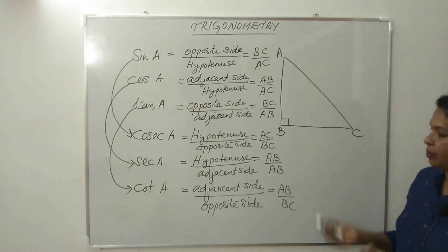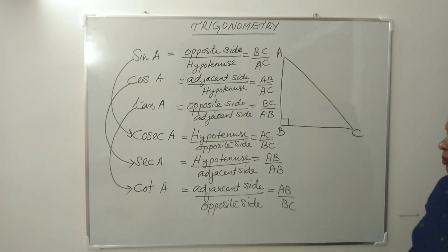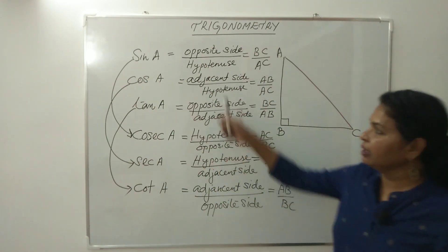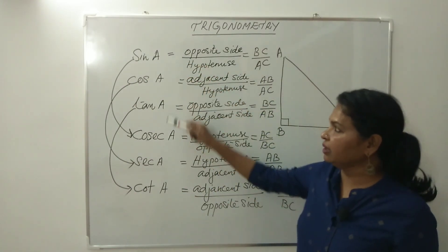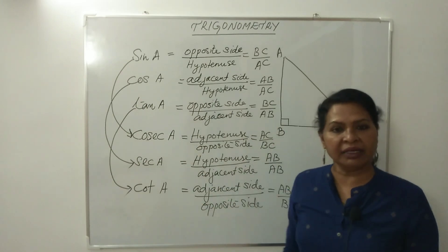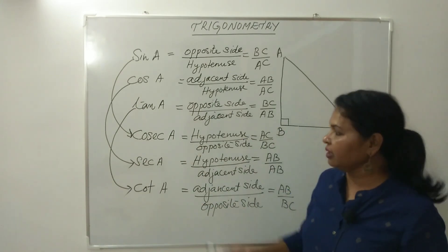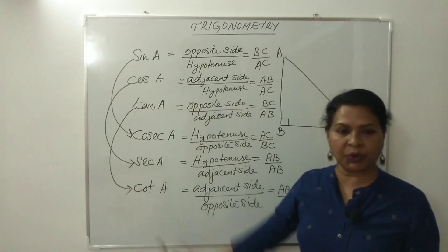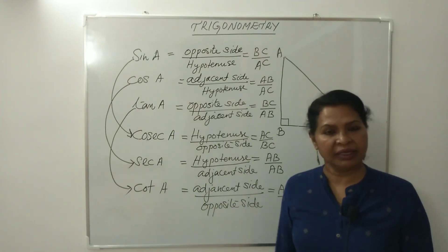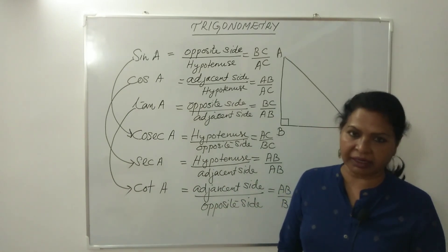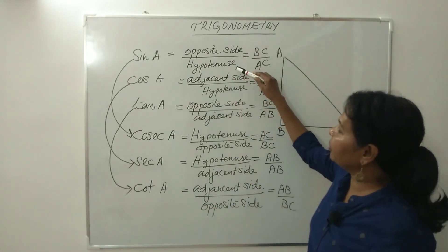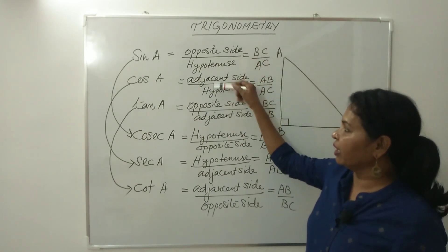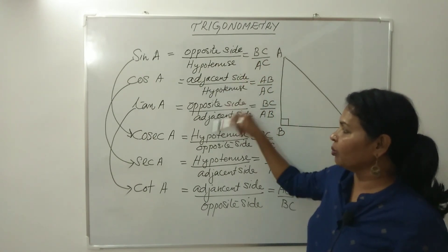To summarize the trigonometric ratios for angle A: the opposite side is BC and the adjacent side is AB. We study sine, cosine, tangent, cosecant, secant, and cotangent. The key relationships are: sine equals opposite over hypotenuse (O/H), cosine equals adjacent over hypotenuse (A/H), and tangent equals opposite over adjacent (O/A).